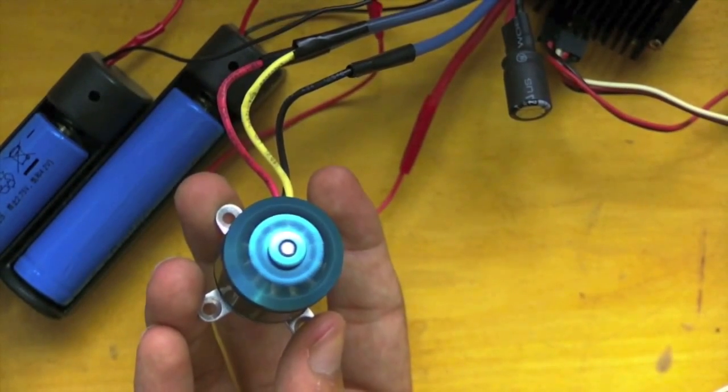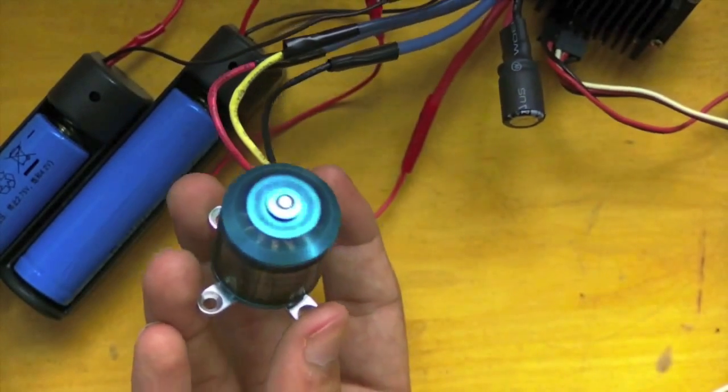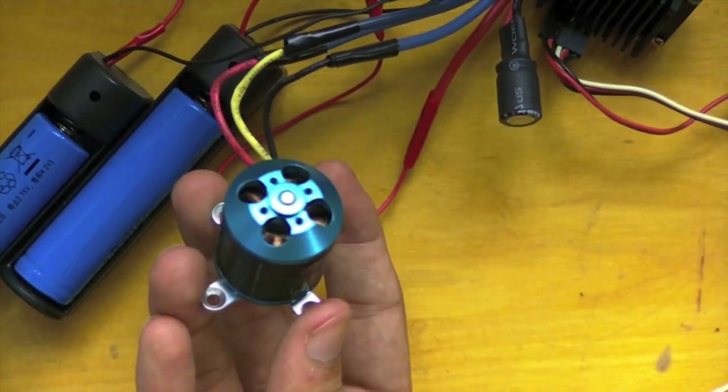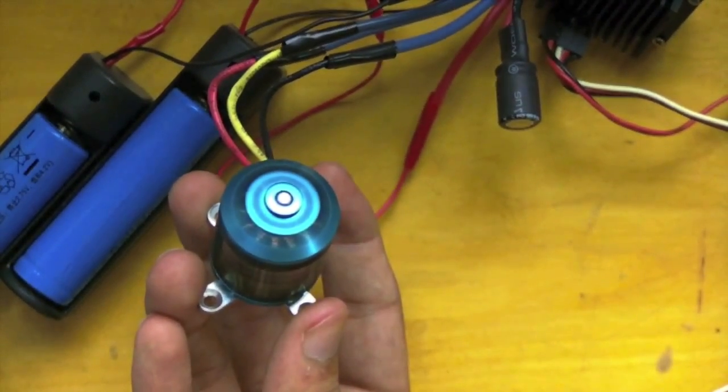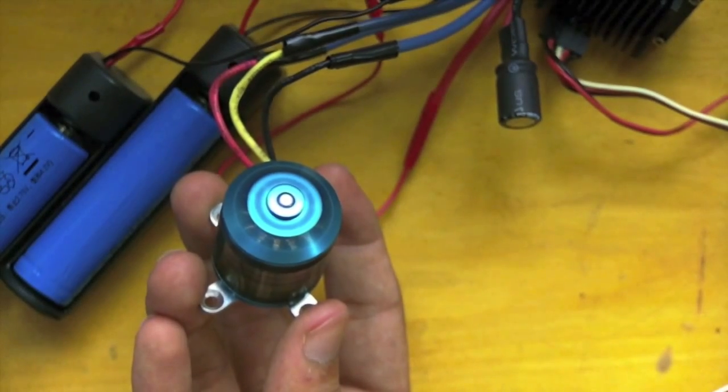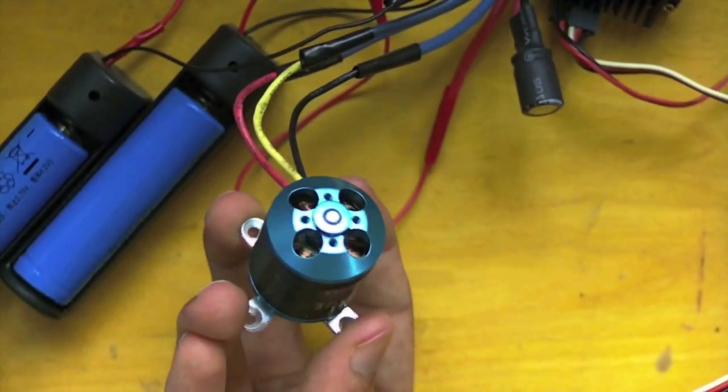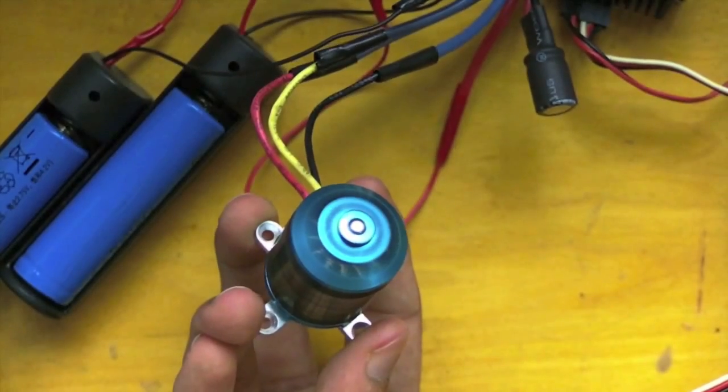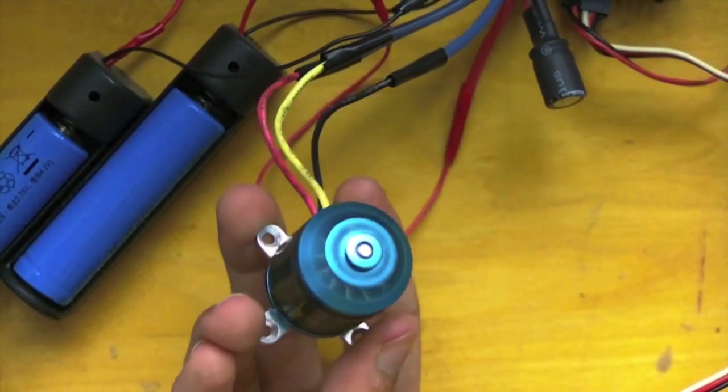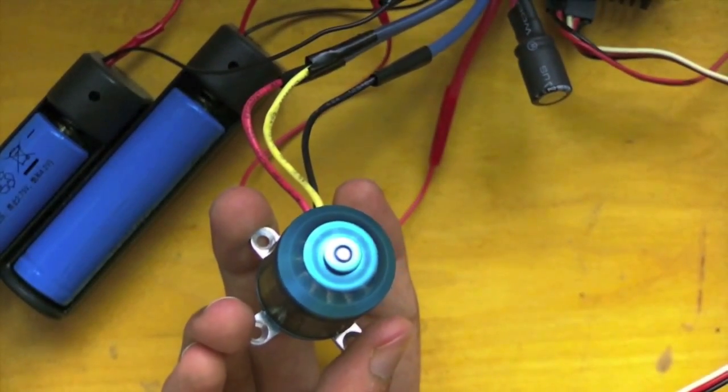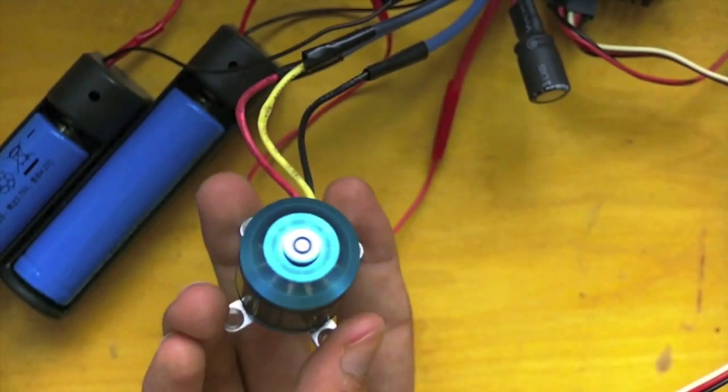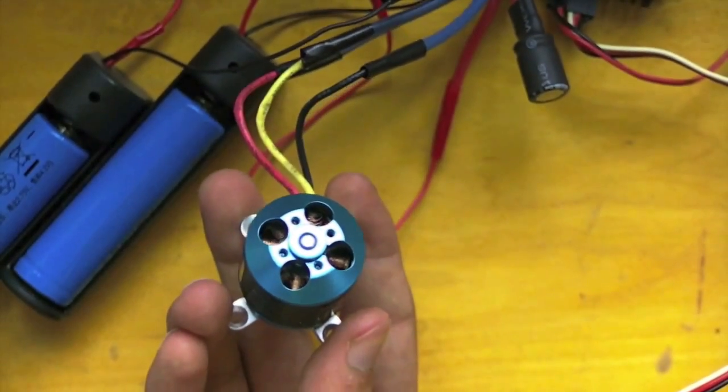You might not be able to see this, but this motor has insane amounts of torque. Like, when I put it at full speed and make the motor brake, it almost jumps out of my hand. Like that. That's because this motor is an out-runner and has a pretty low RPM per volt rating.